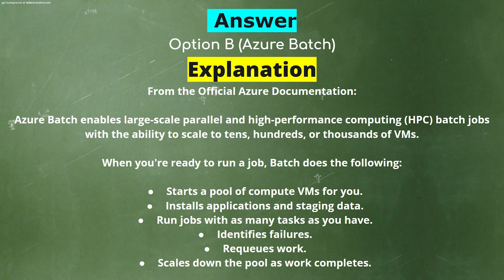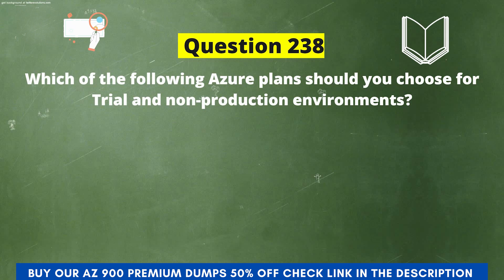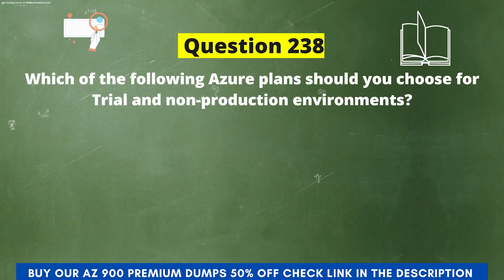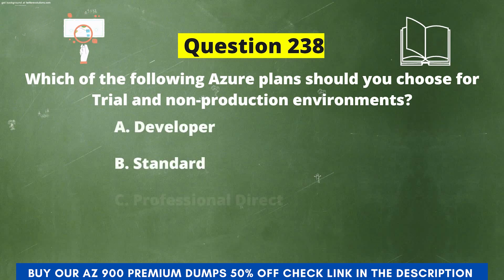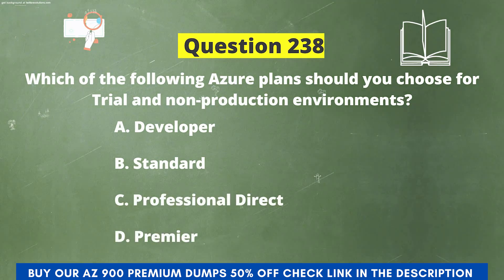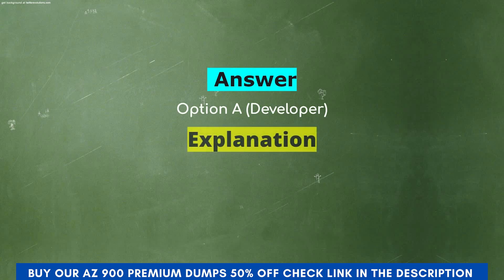Next question: Which of the following Azure plans should you choose for trial and non-production environments? The options are: A) Developer, B) Standard, C) Professional Direct, D) Premier. The correct answer is option A, Developer.